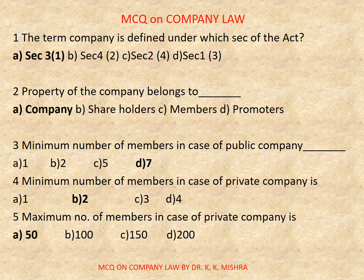Question number 5: Maximum number of members in case of a private company is — Options are: A) 20, B) 10, C) 5, D) 50. Correct option is D, 50.